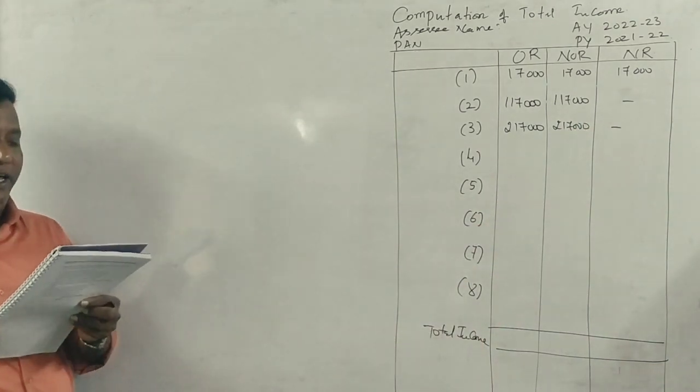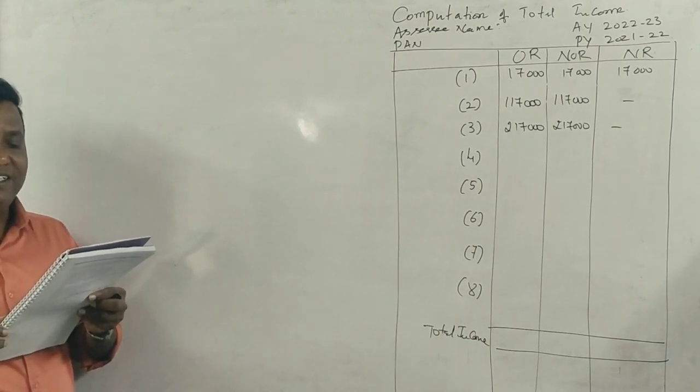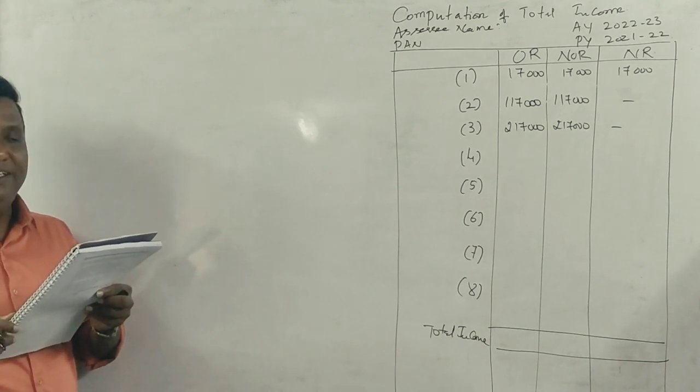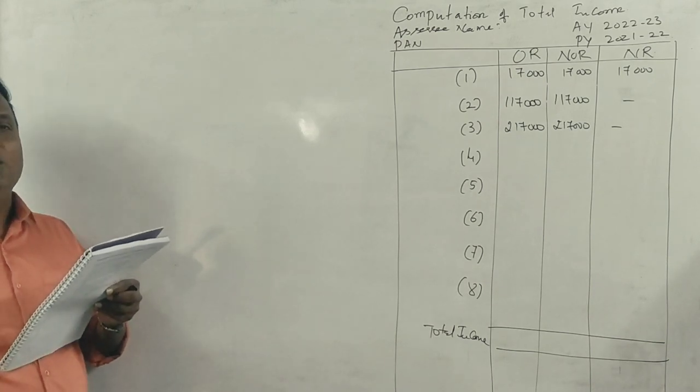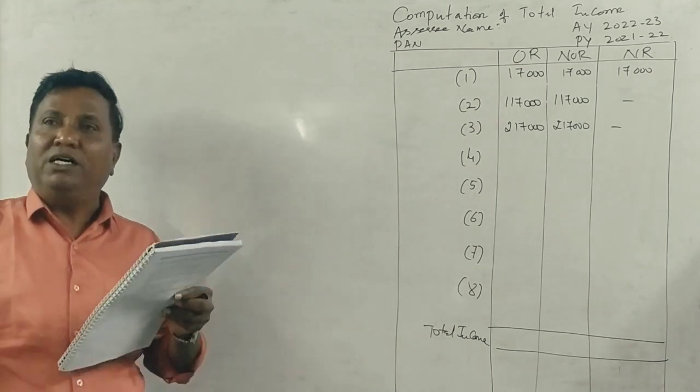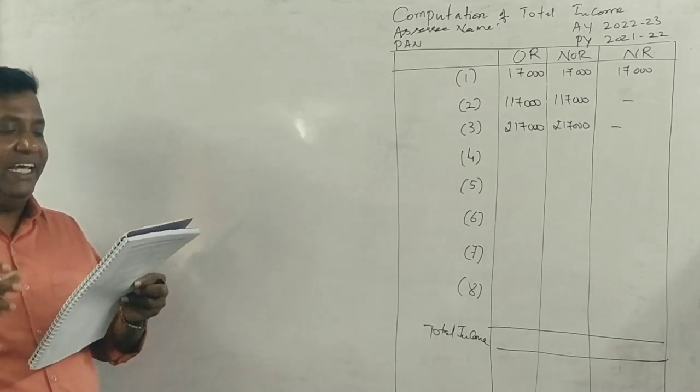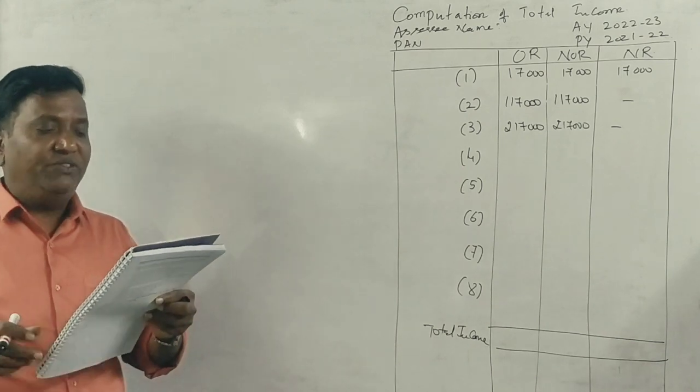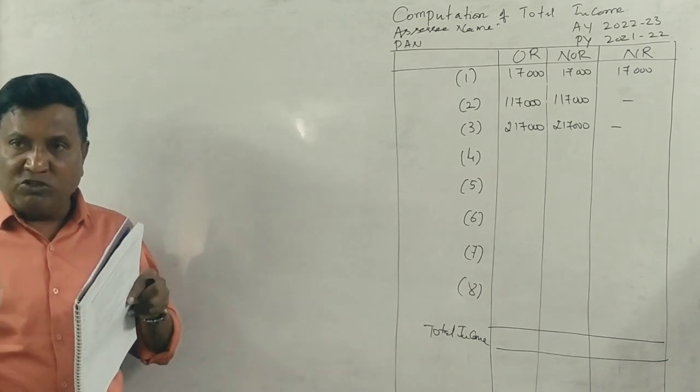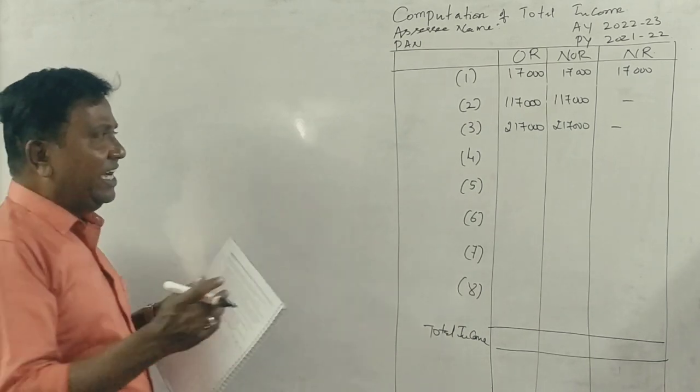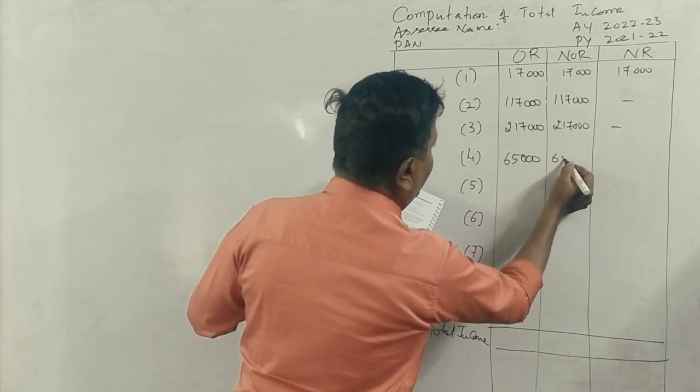Next point, income earned from business in Uganda. The business is controlled from Delhi. But if you are an average of 60,000, if you are in Uganda, you are in Uganda, is an average of 60,000. You are in Uganda, and if you are in the bracket, you are in India. I got a control. I wrote the full income 65,000 in the first two cases. 15,000 though India is brought, that money is 15,000.